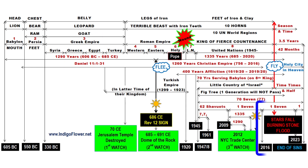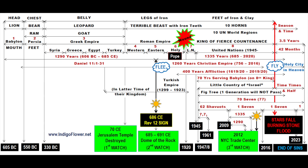So as you can see, we are literally right there at the end of this very complex timeline that has been fulfilling itself for literally thousands of years. The final 7 years appears to be starting now in 2017, and that is why I am trying to get this out to as many people as possible. As far as I know, there is no other chart like it. You can also print this chart for free on my website indigoflower.net. Thank you so much to those who make this work possible, and if you liked this video please consider providing support.